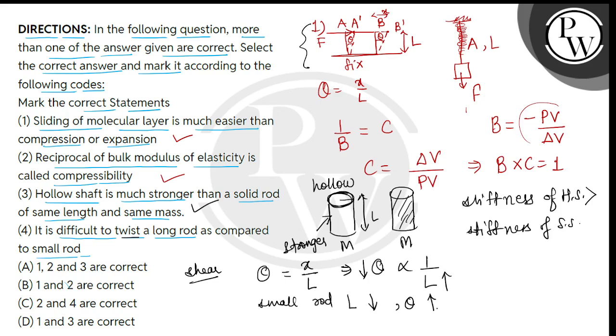So, here, it is difficult to twist a long rod, because it is controversial here, meaning it is ultra. Long rod is more easy. So, we can say that statement number 4 is incorrect.